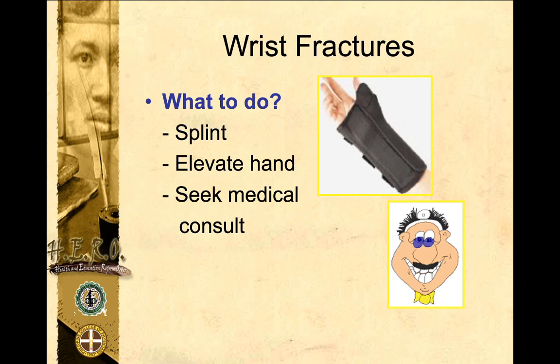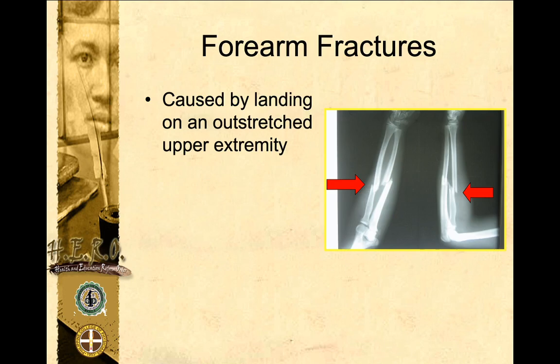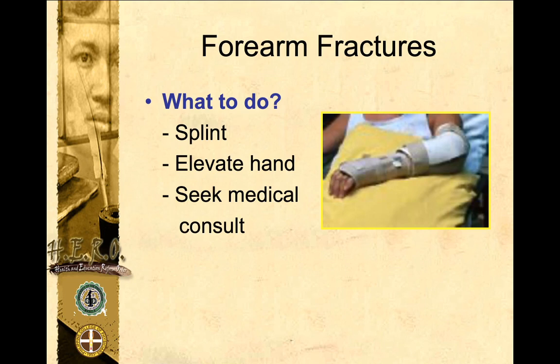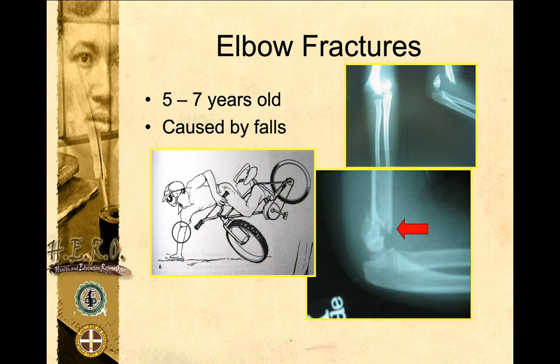For forearm fractures, these are also caused by landing on a stretched upper extremity. You can see on the mid forearm some signs and symptoms of swelling, tenderness, and deformity. As mentioned, you can tell if there's a more serious injury if the fracture is an open type — when you see exposed bone or active bleeding. For both open and closed injuries: splint, elevate, apply ice compress if available, and seek medical consult from your school doctor or school nurse.